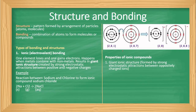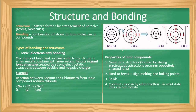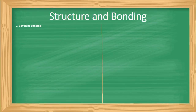In terms of the properties of ionic compounds: one, they have a giant ionic structure formed due to electrostatic attractions between oppositely charged ions; two, they are hard to break — they have high melting and boiling points; three, they are solids; four, they conduct electricity when molten because the ions become mobile when molten, but not in solid form where ions are immobile; and five, they are soluble in water.